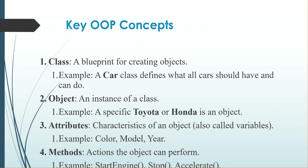Attributes are characteristics of an object, also sometimes called variables. For example: color, model, and year. The color is the color of the car, the model is the brand or type of car, and the year is when the car was manufactured. Methods are actions the object can perform. For example, a car can perform the action of movement — it can start, stop, and accelerate.